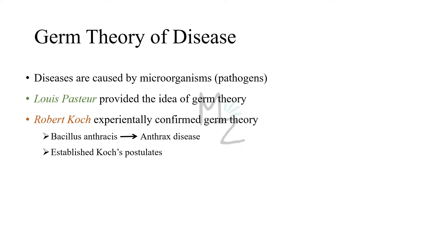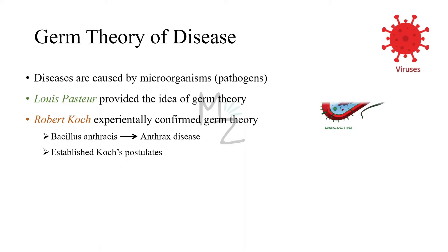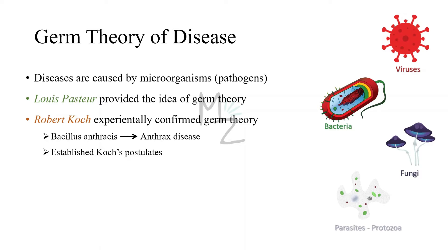Germ theory of disease. Diseases are caused by microorganisms — the microbes or pathogens like viruses, bacteria, fungi, and parasites that include protozoa and helminths. Louis Pasteur provided the idea of germ theory, while Robert Koch experimentally confirmed it. He was working in Germany on Bacillus anthracis and found out that it is responsible for causing anthrax disease. He then established four Koch's postulates.